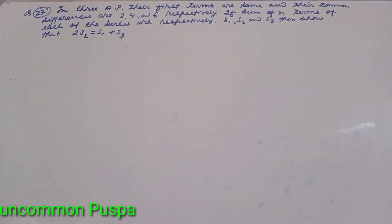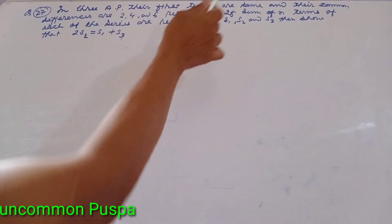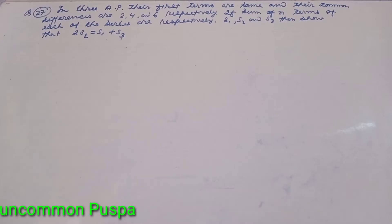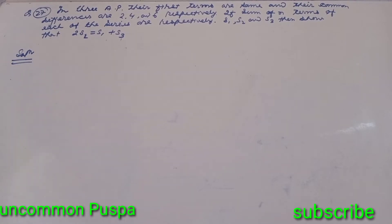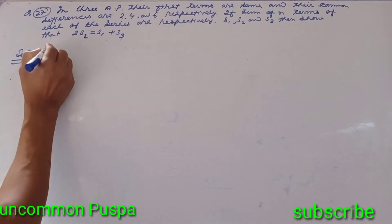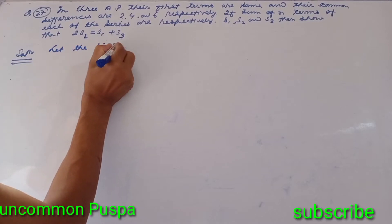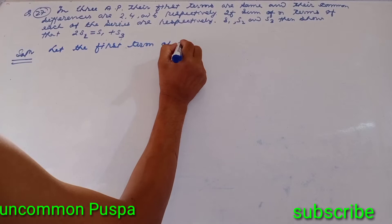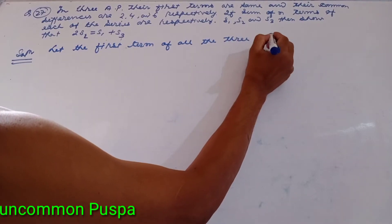We will go through this step by step. Let the first term of all three APs be A. The common differences for the three APs are D equals 2, 4, and 6.